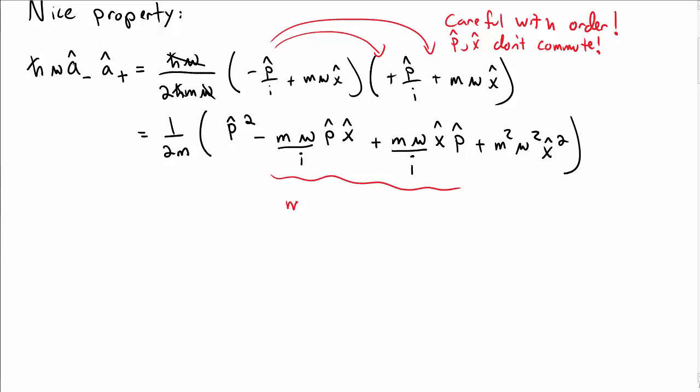Let's try and clean this up. Let's look at this middle term. This middle term is Mω/i times the combination of X̂P̂ minus P̂X̂. Hey wait a second, that's Mω/i times the commutator between X̂ and P̂. And we learned previously that the commutator is iħ, and so the i's cancel, and so this term in the middle is something nice and simple.